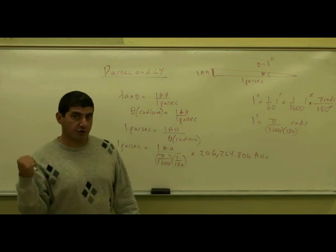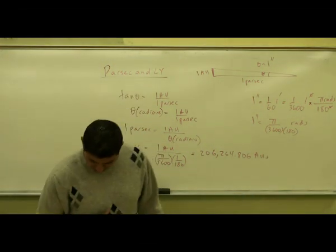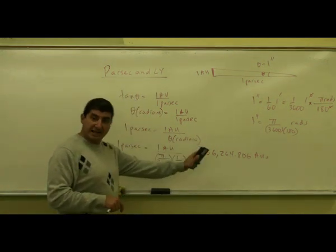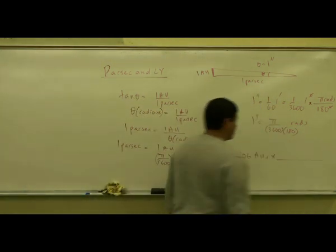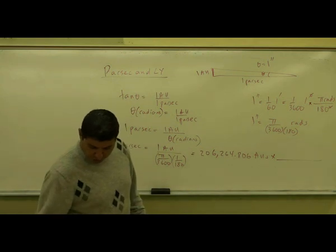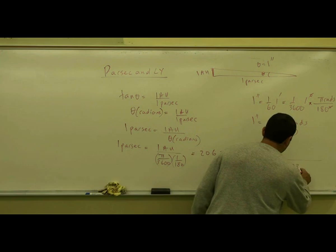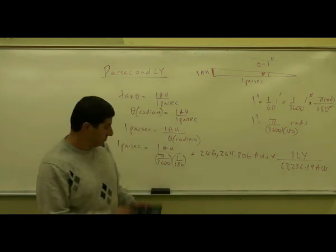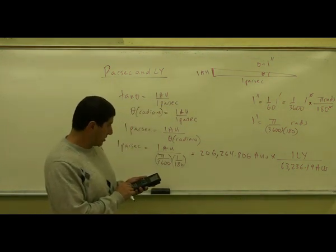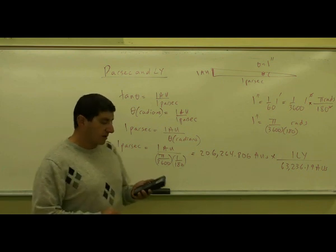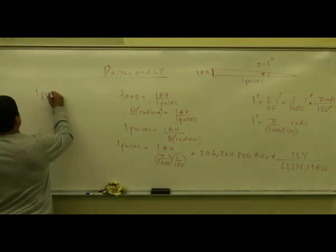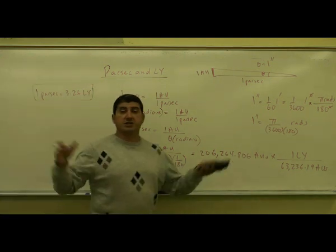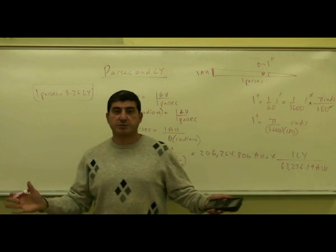Now in the last video, I showed that one light year was approximately 63,000 AUs, right? So if I want to know the relationship between the parsec and the light year, I say 63,236.19 AUs is one light year. So divide this by 63,236.19 AUs, I get 3.26. So one parsec is 3.26 light years. So even though the light year is a huge unit of measurement, the parsec is even bigger.